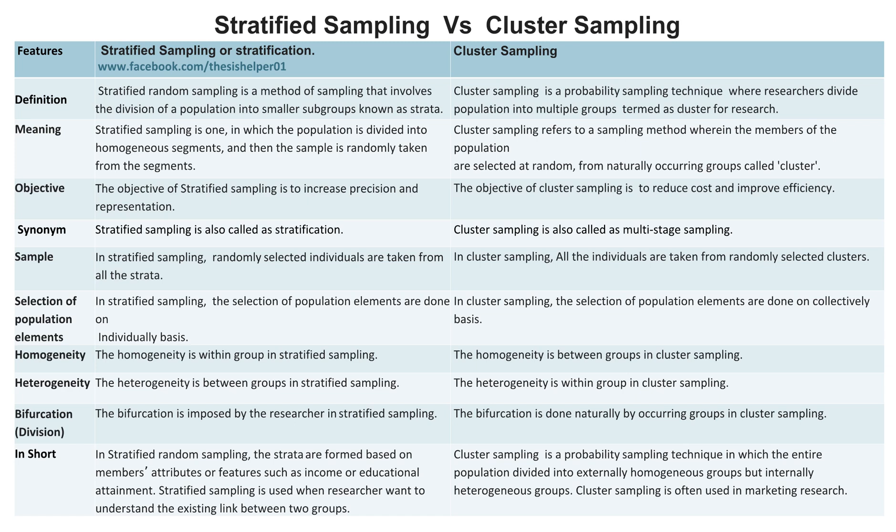The homogeneity is within the group in stratified sampling, whereas the homogeneity is between groups in cluster sampling. The heterogeneity is between groups in stratified sampling, whereas the heterogeneity is within the group in cluster sampling.